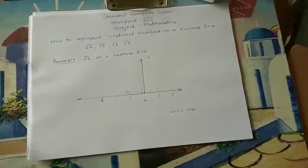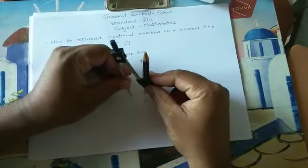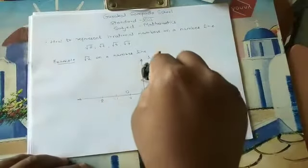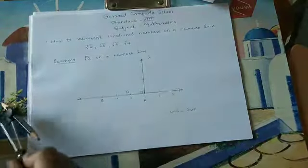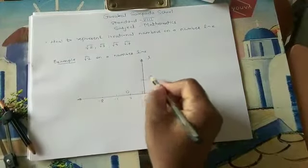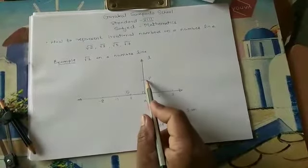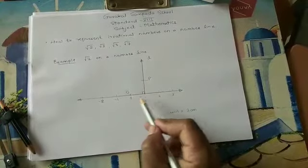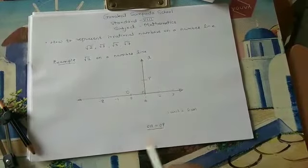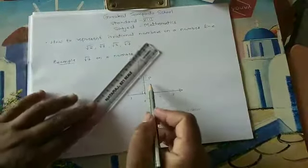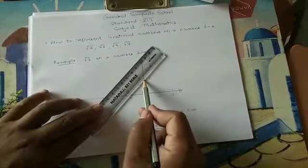Mark the point P which is at a unit distance on line L. For that, I take a distance of OA, which is 1 unit, keep at point A, and mark on line L, which represents point P. So OA is equal to AP. We mark point P on this perpendicular line at a distance of 1 unit so that OA equals AP. Next step: join the segment OP.